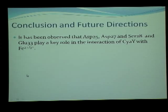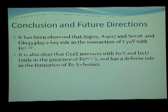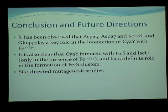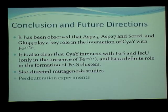These four residues play a key role in the interaction of CyaY with iron(II) and iron(III) both. It is also clear that CyaY interacts with IscS and ISCU and has a definite role in iron-sulphur cluster formation. We need further experiments to clarify and verify these results. Site-directed mutagenesis will help — we can replace those residues and study whether there is an effect. Perdeuteration experiments can also be done to obtain the peaks in the spectrum and then assign them properly.